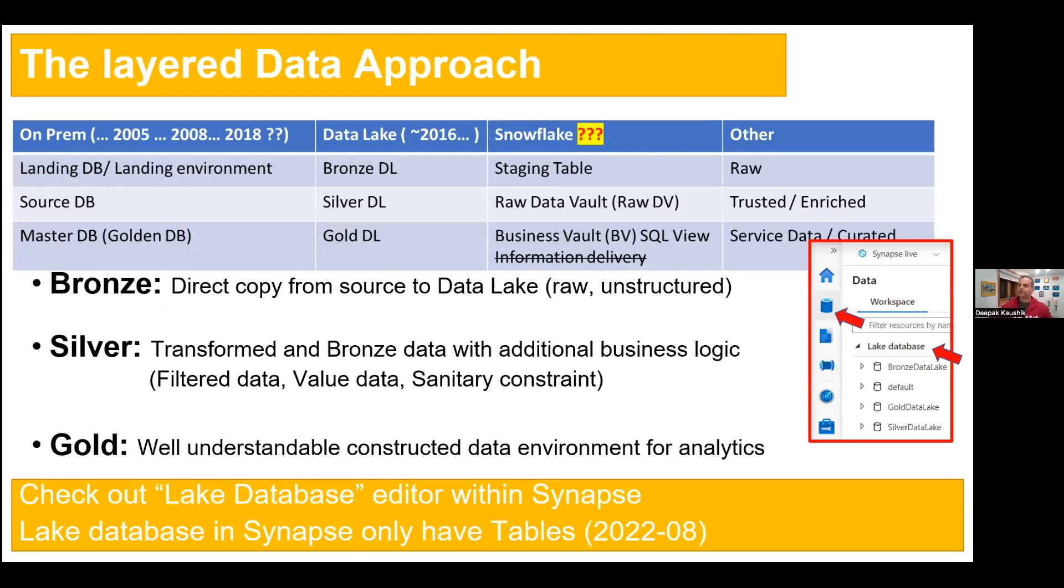So let's understand this. For example, on the left-hand side, we could see on-prem when it was 2005, 2008 or 2018, we had on-prem landing zones. We have source database and master database. Sometimes we say bronze, silver or gold, or sometimes we say dev, stage, and production. That concept has been changed in Delta Lake. Now we have bronze Delta Lake, silver Delta Lake or gold Delta Lake. And similarly in Snowflake as well, staging table, raw data vault or business vault.